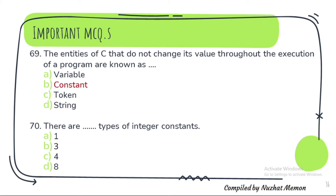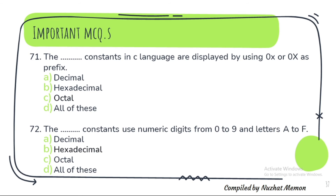Question 70: There are three types of integer constants. Question 71: The dash constants in C language are displayed by using 0x or 0X as prefix — it is B, hexadecimal. Question 72: The hexadecimal constants use numeric digits from 0 to 9 and letters A to F — again option B, hexadecimal.